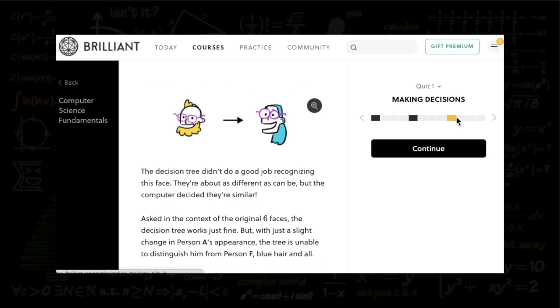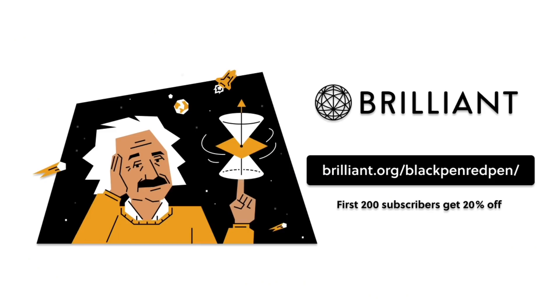And I have a discount code for you guys today. If you guys go to brilliant.org slash blackpenredpen, you can get 20% off their annual premium subscription. So go check them out, and thank you so much to Brilliant for sponsoring this video.